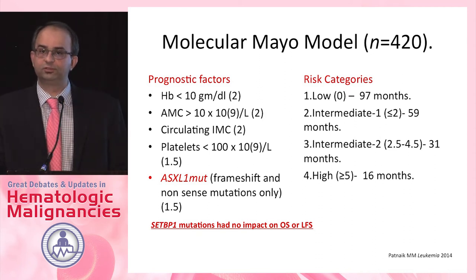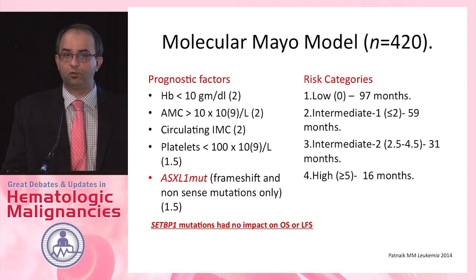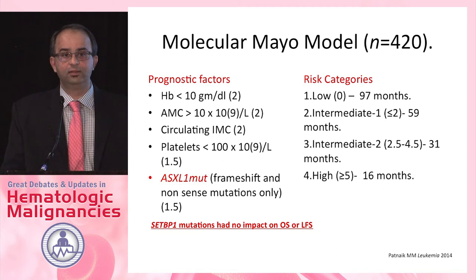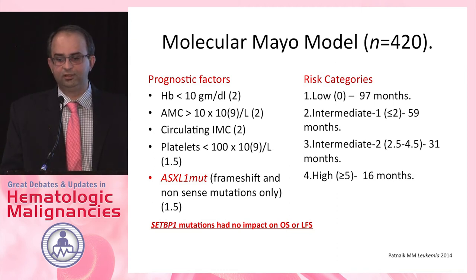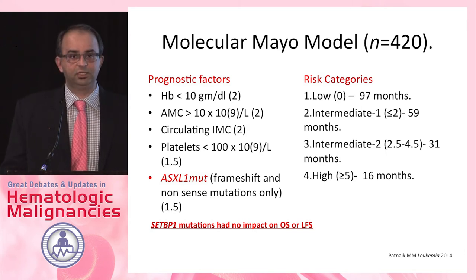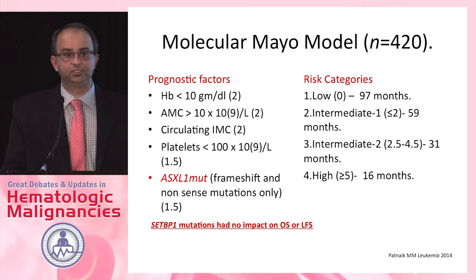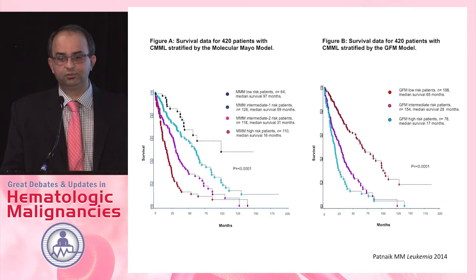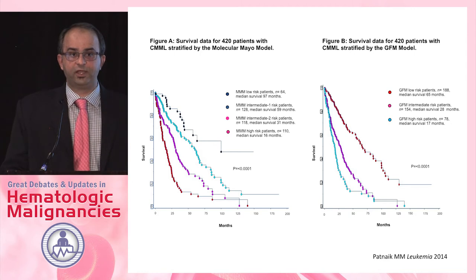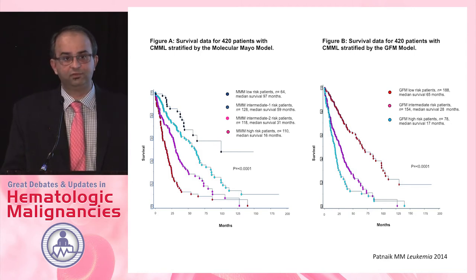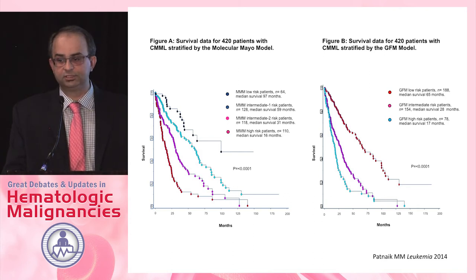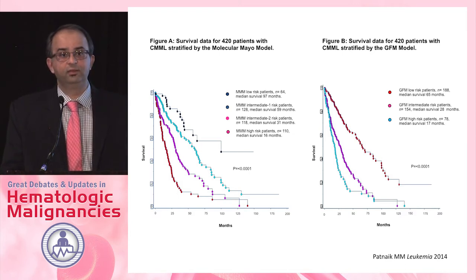We then combined efforts with the French group using our original Mayo cohort, and re-examined ASXL1 after excluding missense mutations, confirming that frameshift and nonsense mutations were prognostic. SETBP1 mutations had also been described, but in 420 patients on multivariate analysis, SETBP1 was not found to be significant. The two molecularly integrated comprehensive CMML models — in a shared French and Mayo Clinic database — effectively stratified patients. The Mayo molecular model shows low, intermediate-1, intermediate-2, and high risk patients, as does the GFM model. None of these models, when compared side by side, were proven to be superior to each other.